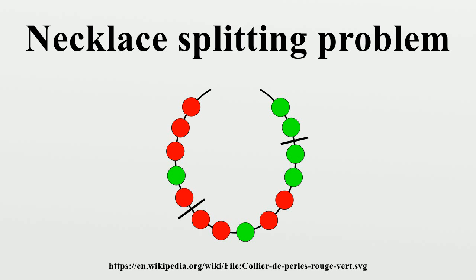Further results: one cut fewer than needed in the case of two thieves, i.e., k equals 2, and T colors. A fair split would require at most T cuts. If, however, only T minus 1 cuts are available, Hungarian mathematician Gabor Simonyi shows that the two thieves can achieve an almost fair division in the following sense.